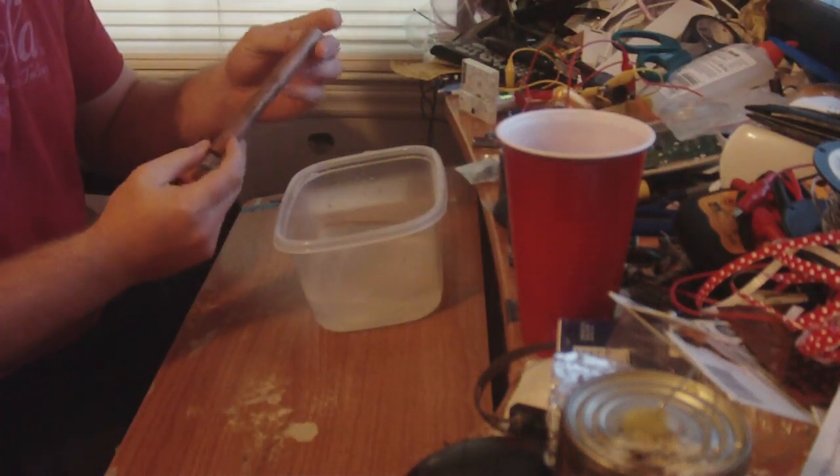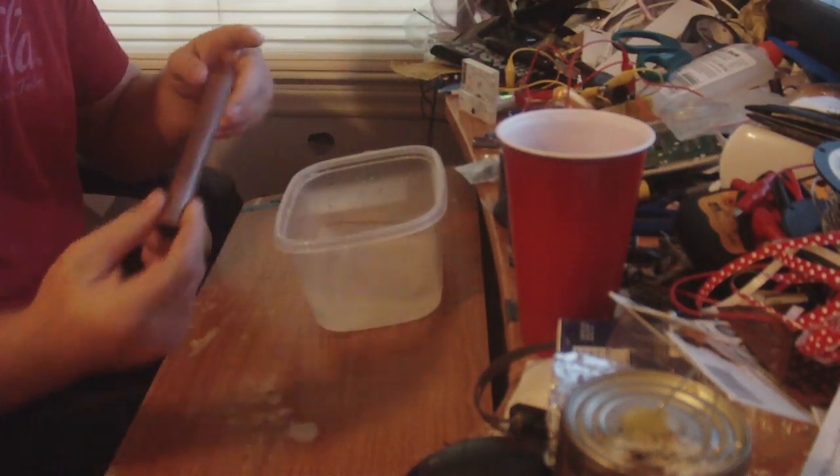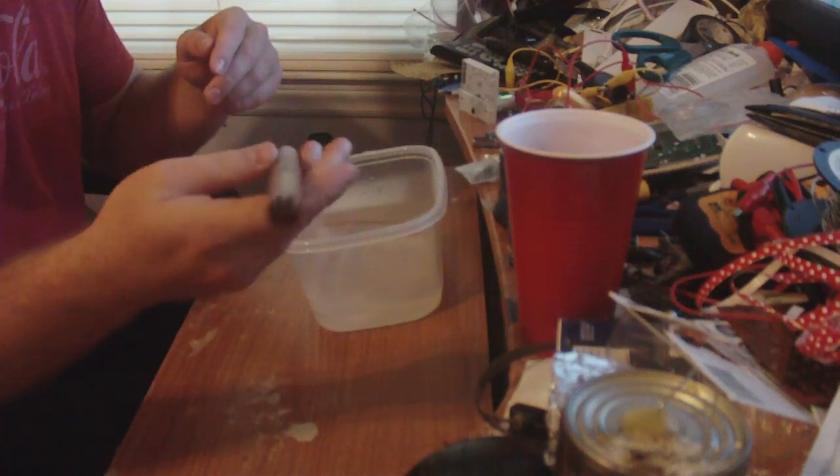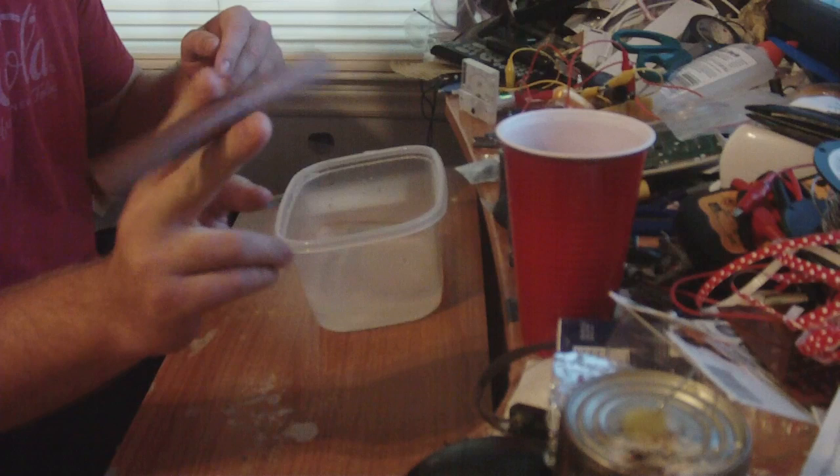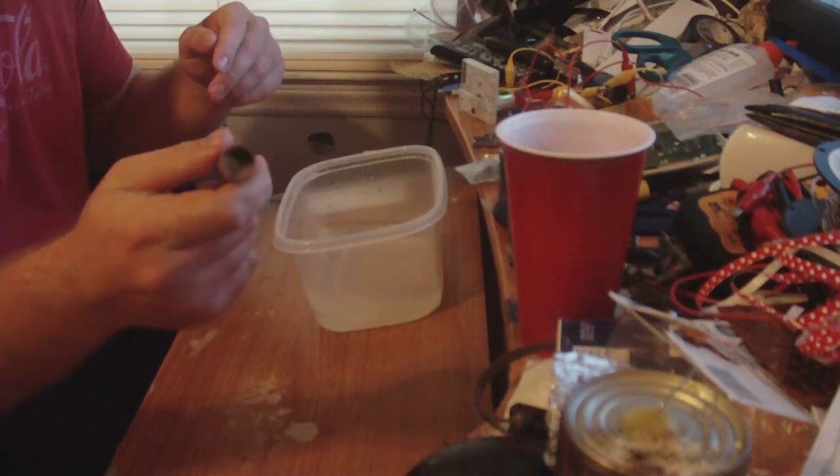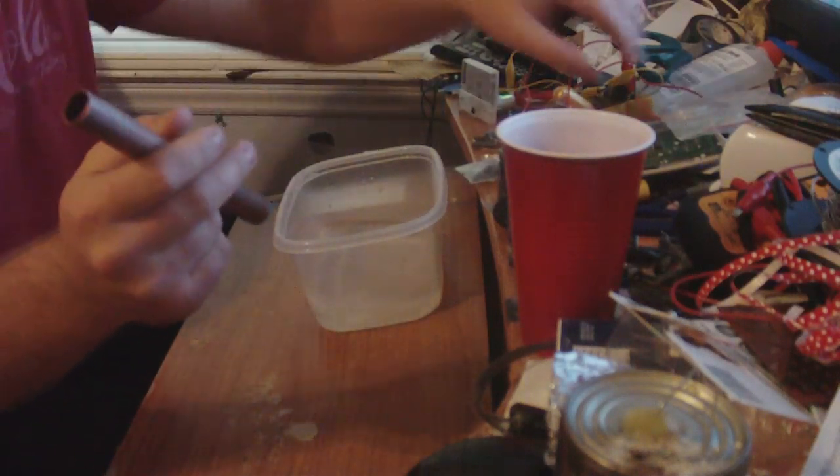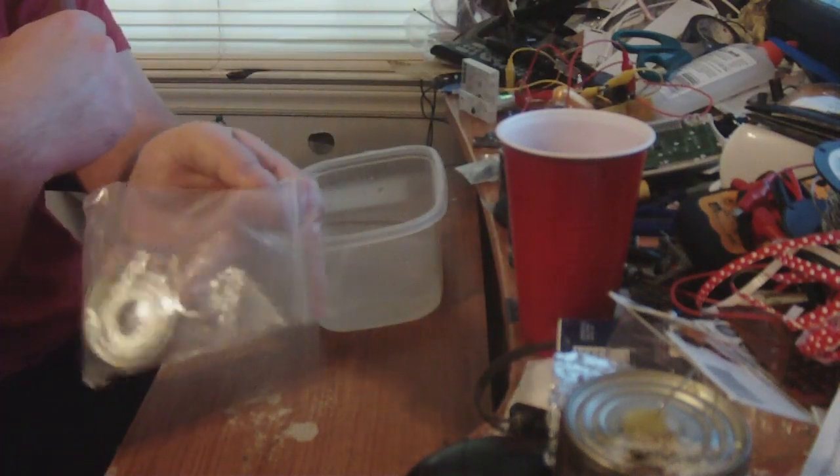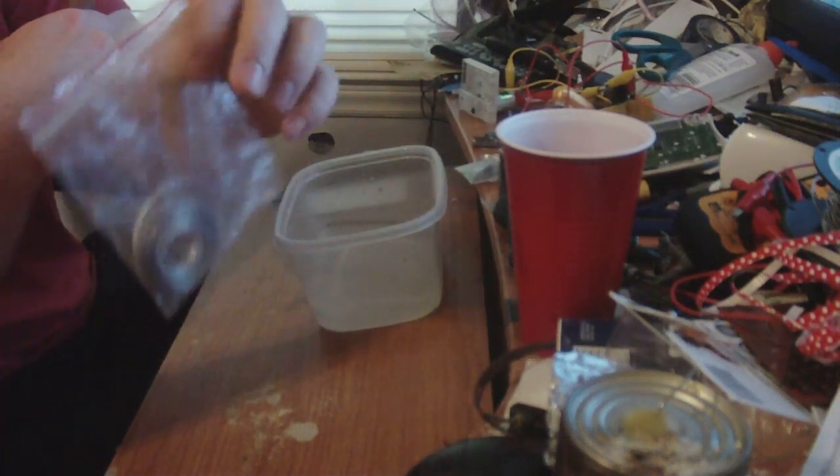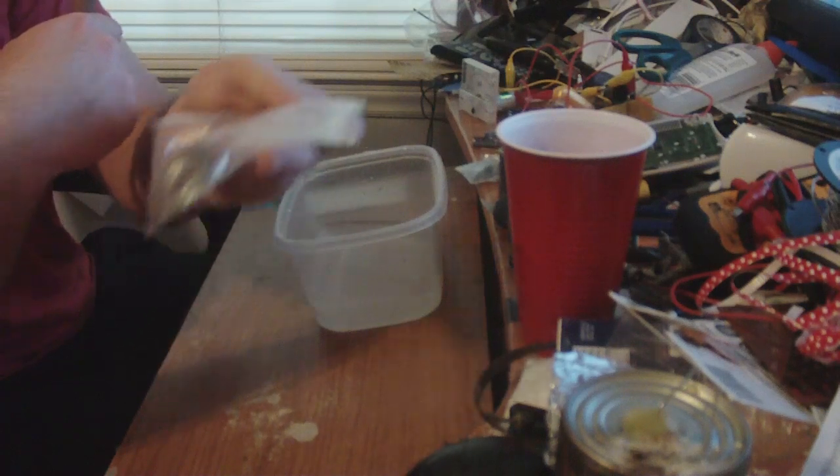What you're going to need is a copper tubing piece like this. You'll find this at a Home Depot or Lowe's in the plumbing section, about six inches long, one inch wide copper tube. You'll also need magnesium ribbon, which you can get off eBay, like a pack of this, about three or four dollars.